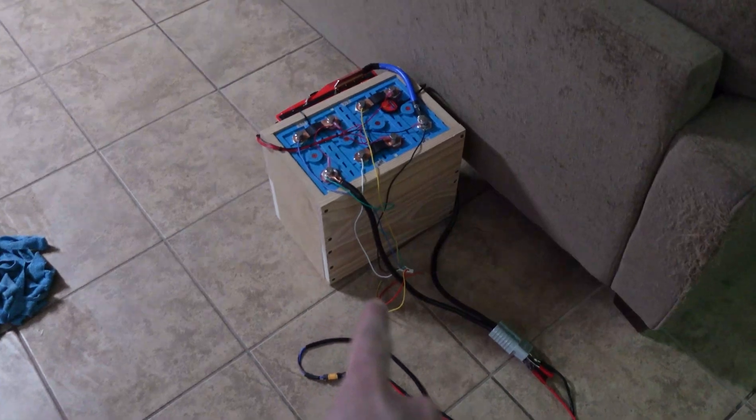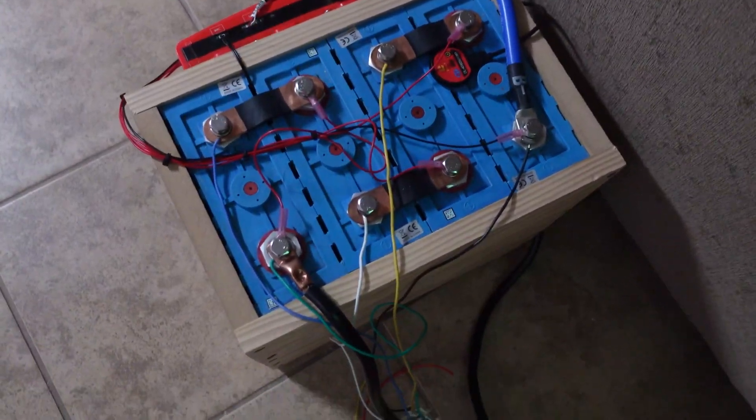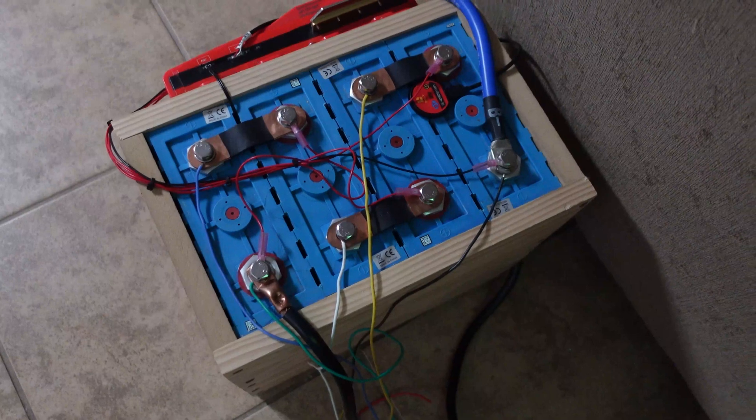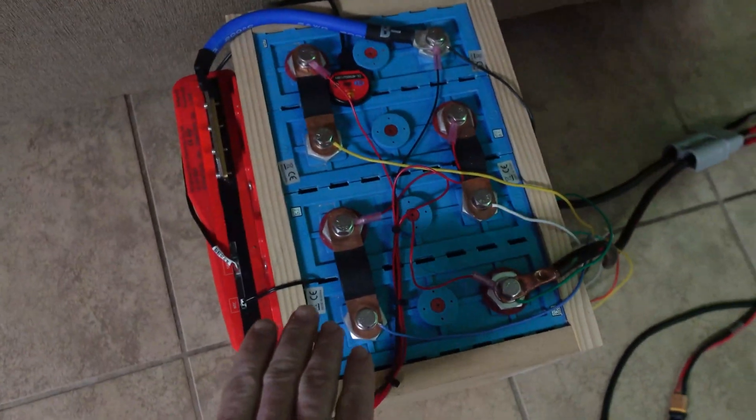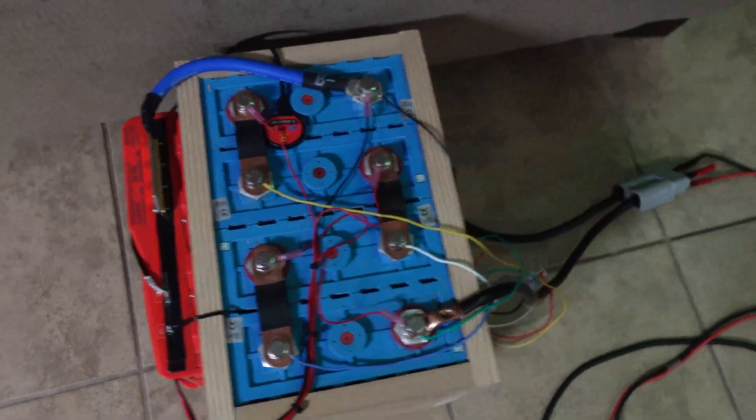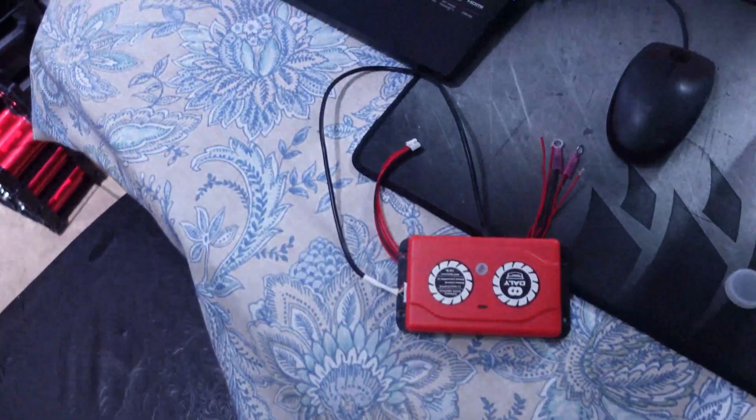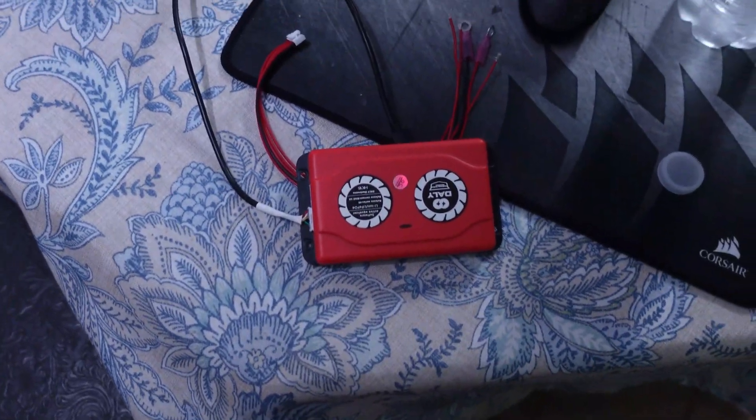The point of this video is a lot of people have been asking me about these blue China cells. I got these on Aliexpress for a little over $400. They're definitely used, probably some grade B nonsense. We have a big Daly 250 amp BMS with Bluetooth. Right now we're just charging it with the 10 amp charger. I'm gonna charge these all the way up. I also have the app on my phone so we can check the cell voltages.